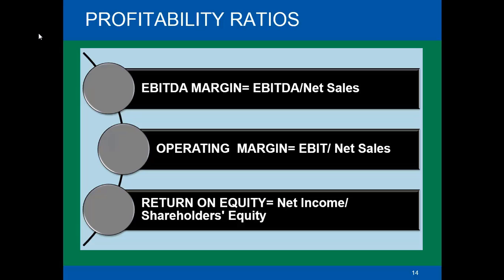Now we'll understand about EBITDA margin. The formula for calculating EBITDA margin is EBITDA divided by net sales. EBITDA stands for Earnings Before Interest, Tax, Depreciation and Amortization. This number represents the company's annual earnings before subtraction of interest payments, taxes, depreciation and amortization. EBITDA can also be called the cash profit that a business earns from its operating activity.